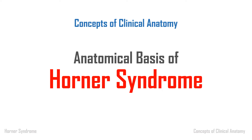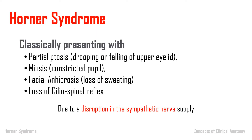Hello everyone. Today we will see the anatomical basis of Horner's syndrome. Horner's syndrome usually presents with partial ptosis — that is drooping or falling of the upper eyelid — miosis, which is constriction of the pupil, facial anhydrosis, which is loss of sweating in the face, and loss of ciliospinal reflex. These features occur due to disruption in the sympathetic nerve supply to the face.